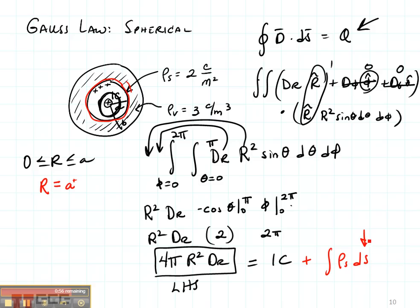My ds term is r² sine of θ dθ dφ. Same as it was up at the top. And my integral is going to go from θ equals 0 to π and φ from 0 to 2π.